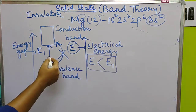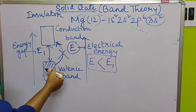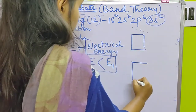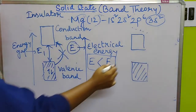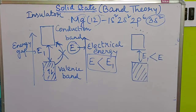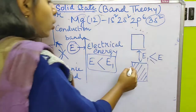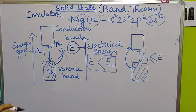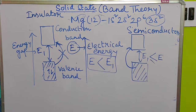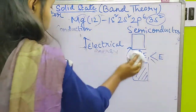Because the energy gap is very high and the supplied electrical energy under normal conditions is less than that gap, the electron cannot move from the valence band to the conduction band. That is why insulators cannot conduct electricity under normal conditions. However, if you increase the temperature or the amount of electrical energy, conductivity increases but by a very small amount.